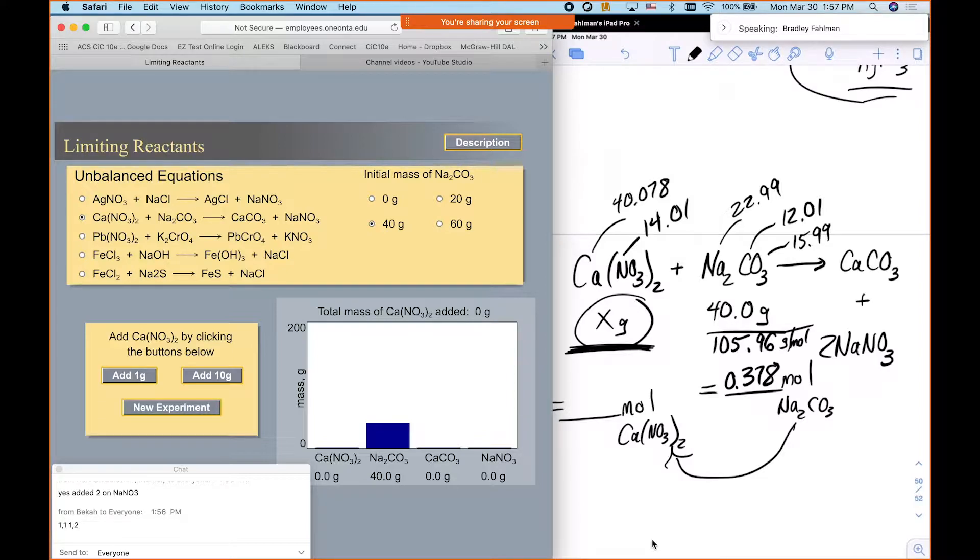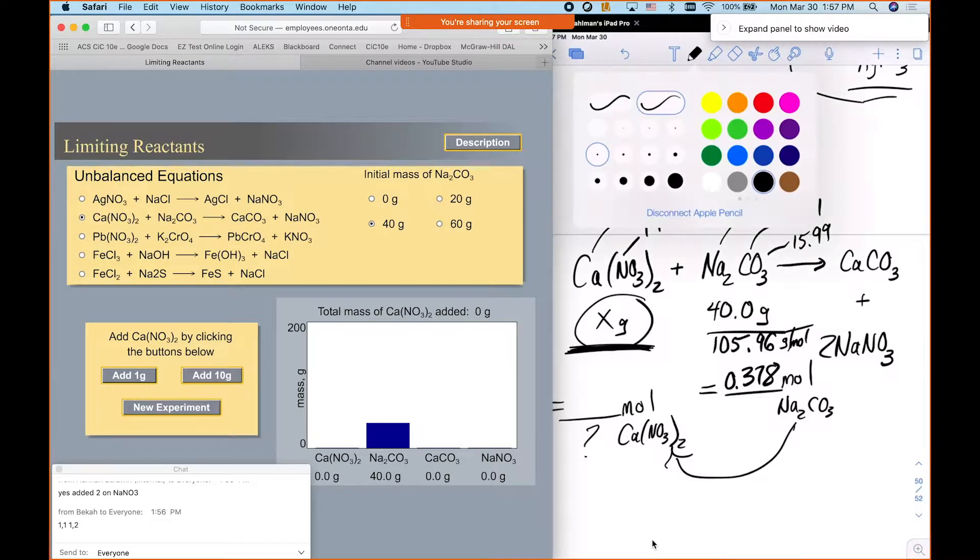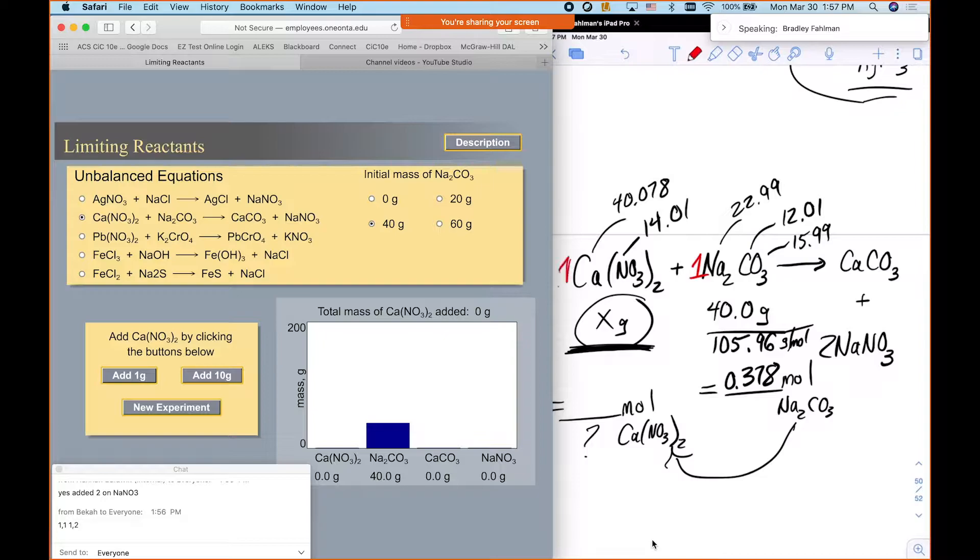Okay, so how many moles of calcium nitrate? Okay, so for this one, again, it's a one to one reaction, right? So that means that you would have 0.378.